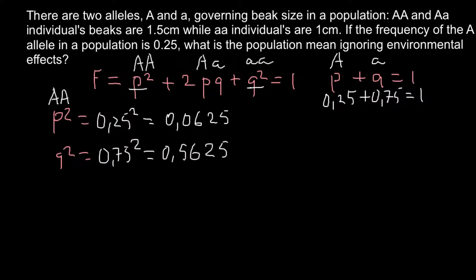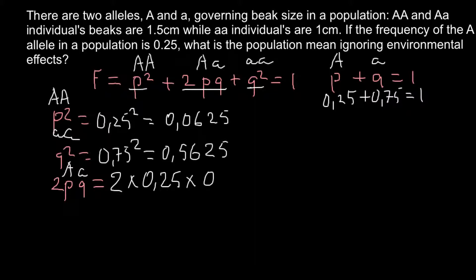Now we have to find the frequency of the heterozygous genotype. According to the formula, this is 2pq. We know p is 0.25 and q is 0.75. The math is straightforward: 2pq equals 0.375. As you can see, if we add all three frequencies — 0.0625, 0.5625, and 0.375 — we get 1.